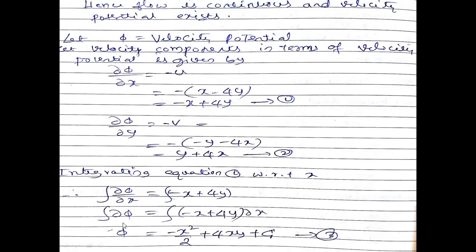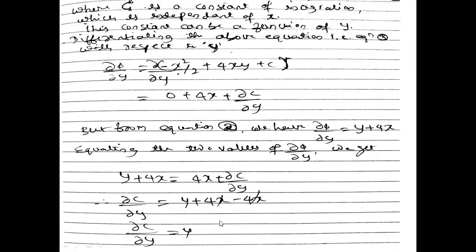This gives the velocity potential form in terms of the constant of integration, but I want the complete equation. Since we integrated with respect to x, the constant C is not a function of x but can be a function of y. So I differentiate equation number three with respect to y: ∂φ/∂y = 0 + 4x + ∂C/∂y.